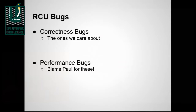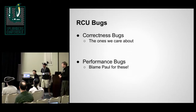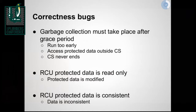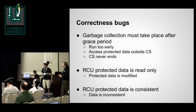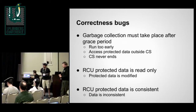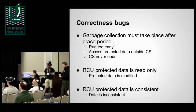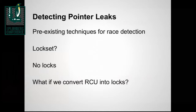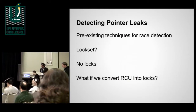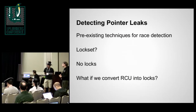Once you have this, you can define what RCU bugs are. They can broadly be classified as correctness bugs and performance bugs. Performance bugs — we'll leave that to Paul. What we are interested in is: are we using RCU correctly? Once we have invariants, we can come up with definitions for bugs: reclaiming data too early, never reclaiming data, directly modifying RCU-protected data, and inconsistency. These can broadly be caught under pointer leaks, and we talk about how to detect them.